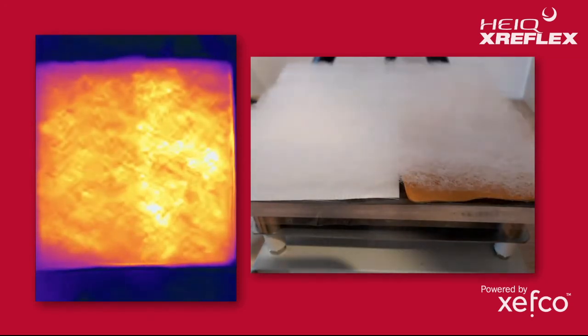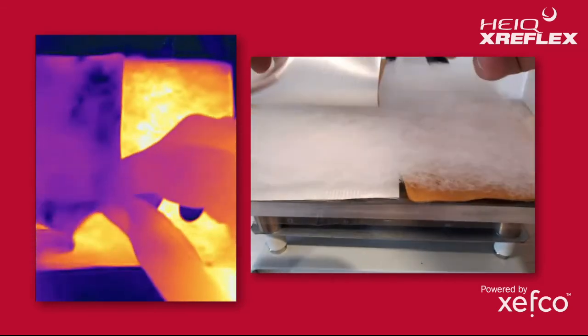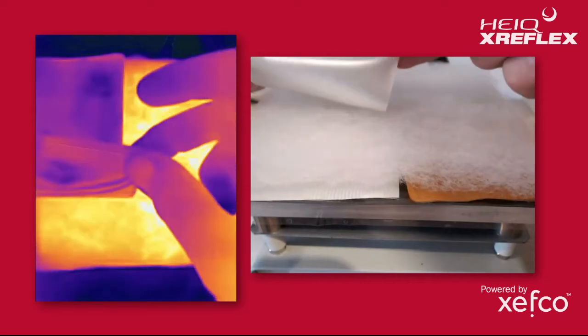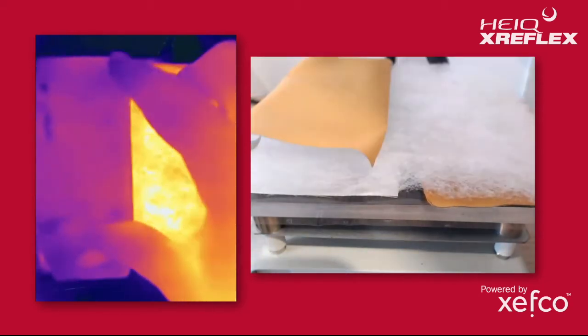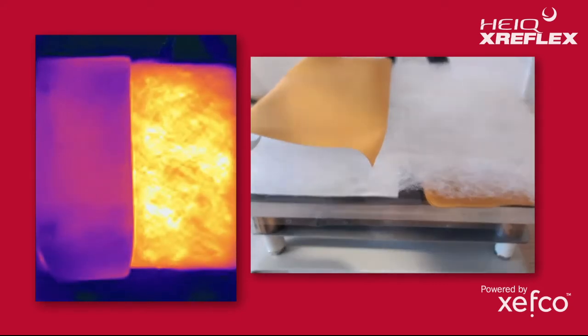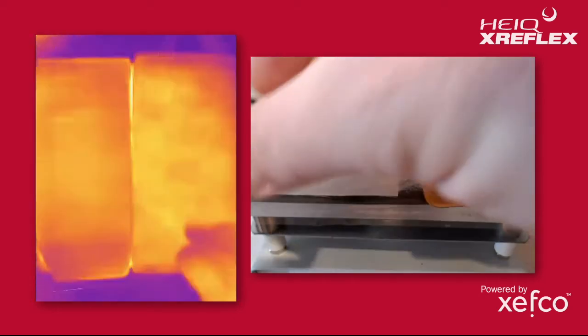Then we'll get our top shell layer. On the left side here we'll layer another fabric treated with X-Reflex, and on the right side fabric without X-Reflex.